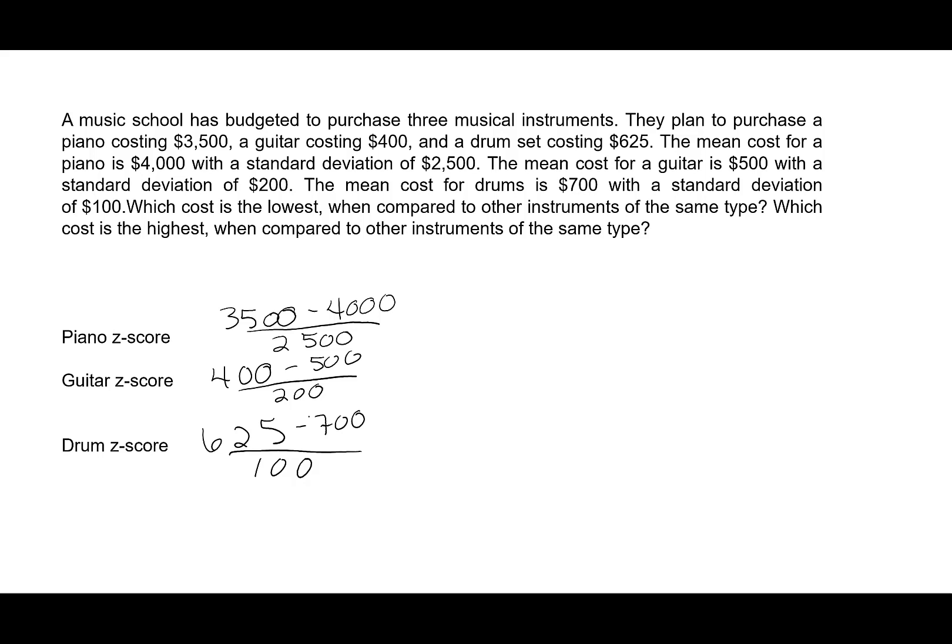So 3,500 minus 4,000 divided by 2,500. This was, I'm going to write the negative just to show it, it's negative 0.2. Then the guitar, 400 minus 500 divided by 200. This is negative 0.5. And then the drums, 625 minus 700 divided by 100 gives us 0.75.